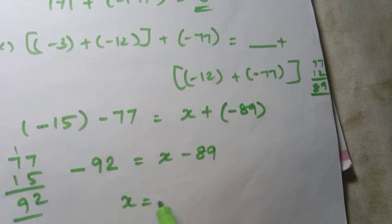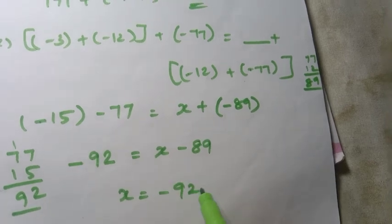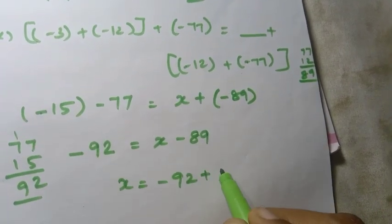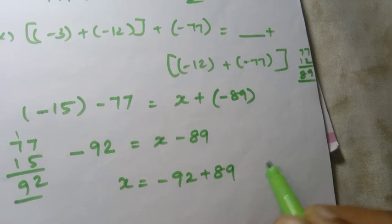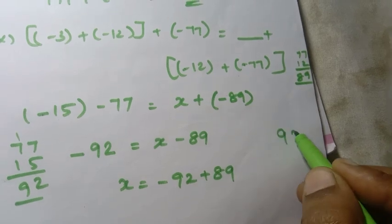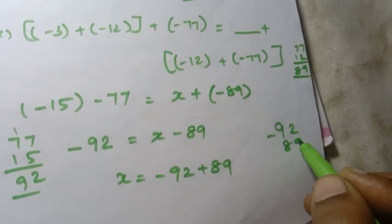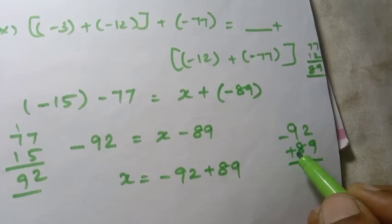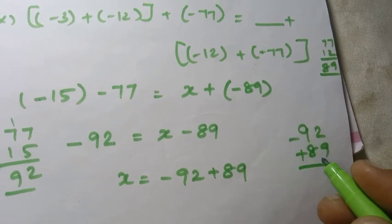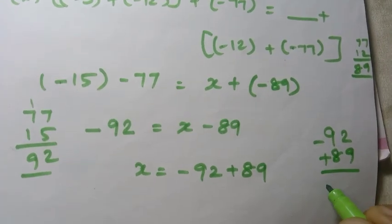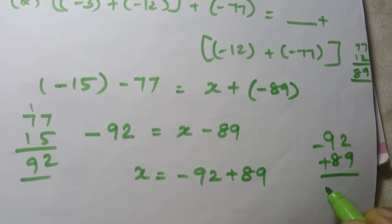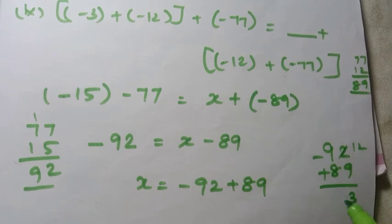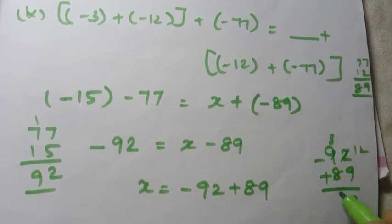So x equals minus 92 plus 89. Different symbols — different sign. So we subtract: 92 minus 89 equals 3. Different sign, so check the highest value's sign: minus 92 is higher, so answer is minus 3.